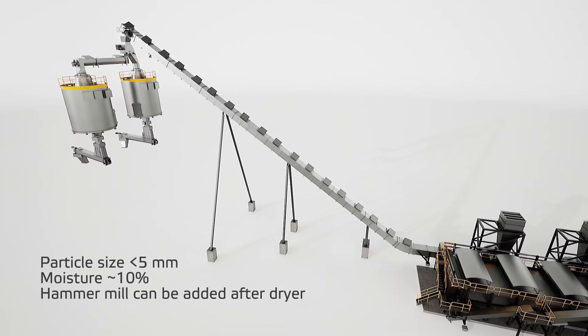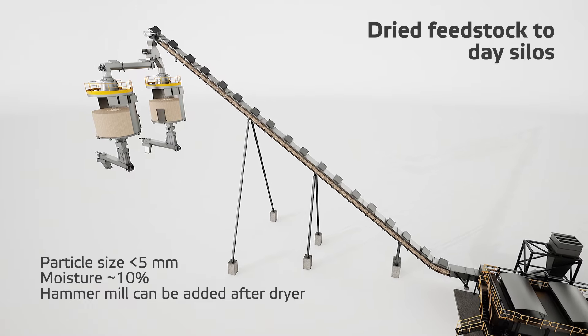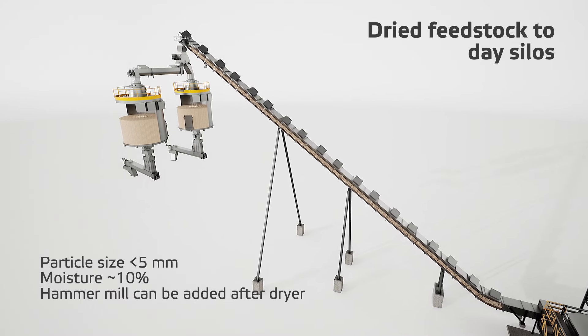If necessary, a hammer mill can be added after the dryer to crush biomass to the required particle size.